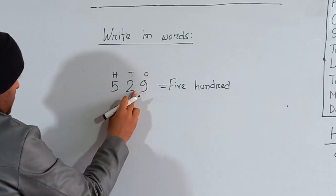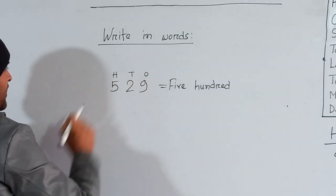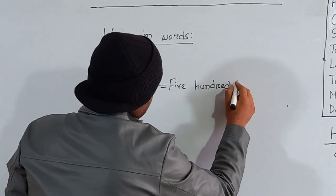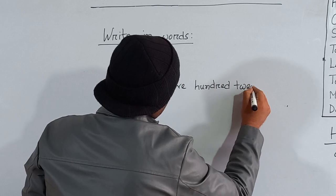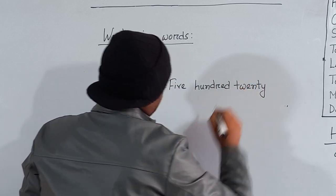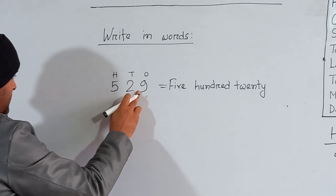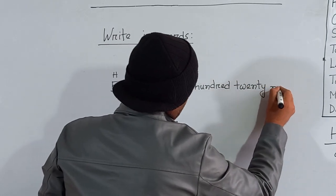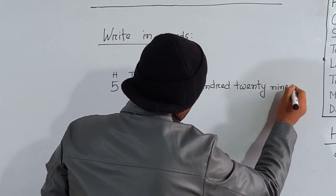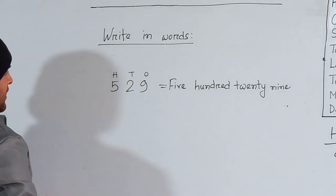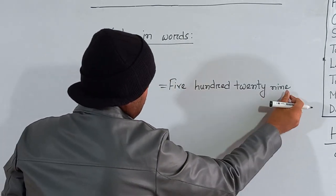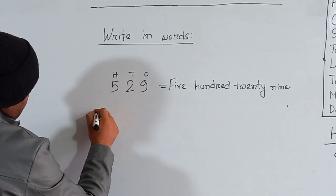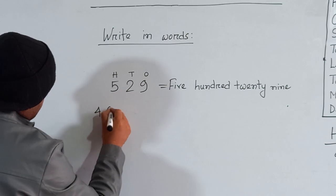And here is two tens. Two tens means twenty. So we can write here T-W-E-N-T-Y, twenty. And here is nine in the ones place, so here is nine — N-I-N-E. So 5-2-9 is called five hundred twenty nine.